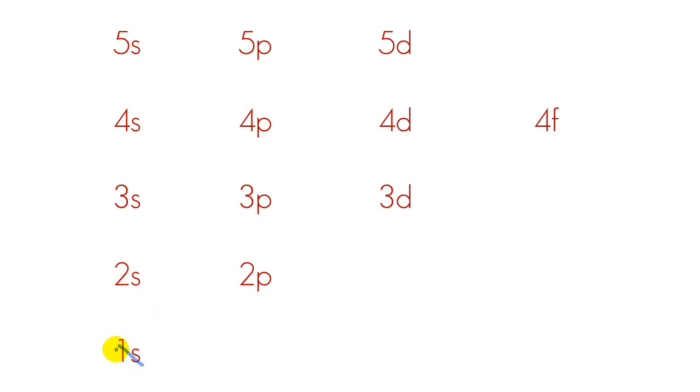So here's how it really works. You fill up all your 1s, and then you go to 2s. Once you fill up 1s, you fill up 2s, and then you go to 2p. From 2p, you fill up 3s. Now from 3p, you fill up 4s. And then you go 3d, 4p, 5s, 4d, 5p, 4f, 5d.